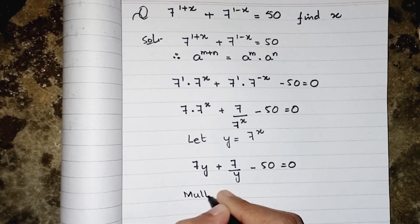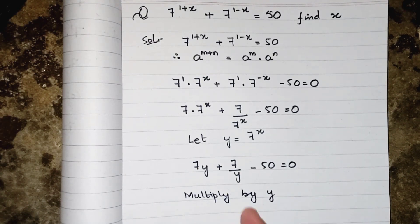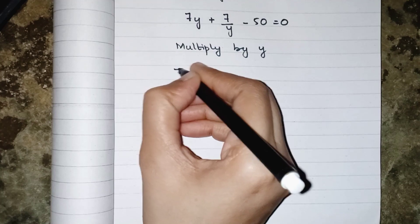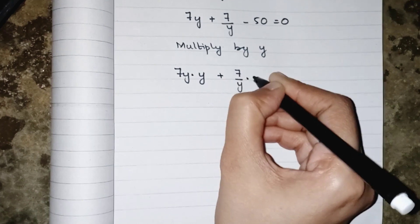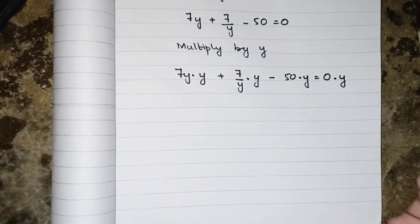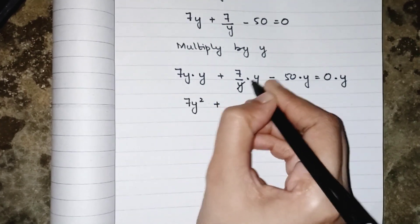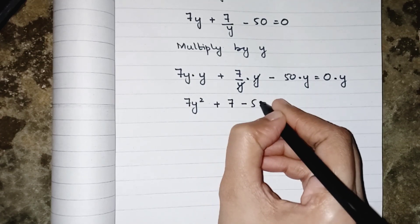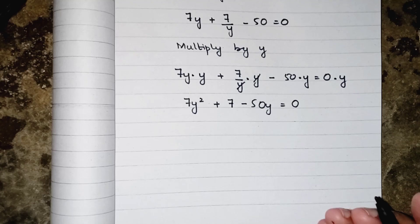Now removing y is much easier than removing 7's power x. We multiply the above equation by y: 7y multiplied by y plus 7 upon y multiplied by y minus 50 multiplied by y equals to 0. This gives 7y squared, y cancels to give 7, minus 50y equals to 0.